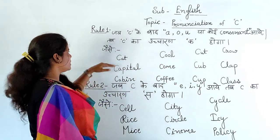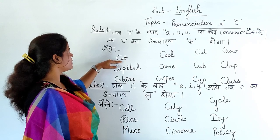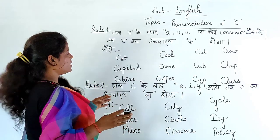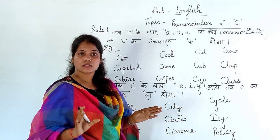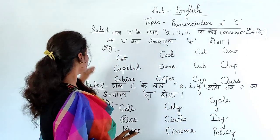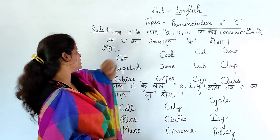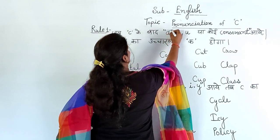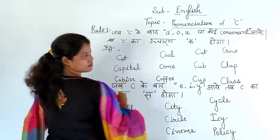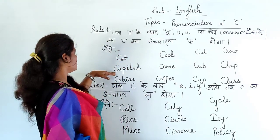Now let us understand. Here I have written CAT — C, A, T. After C comes A. What I told you: when C comes after A, O, U, or a consonant — here after C we have A. So C-A-T, the pronunciation is 'Cat'. Next word is Capital — after C also comes A. So the pronunciation here is 'Capital'. Okay?